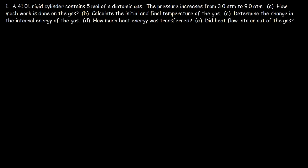Let's work on this problem: a 41-liter rigid cylinder contains five moles of a diatomic gas. The pressure increases from 3 atm to 9 atm. How much work is done on the gas? The first thing we need to know is what type of process we're dealing with — isobaric, isochoric, isothermal, or adiabatic. Notice the key word: rigid cylinder. That means the volume is constant, so we are dealing with an isochoric process.